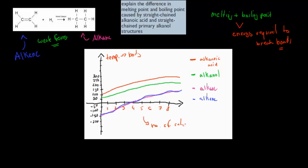There is a difference when it comes to the other two. Alkanols have a higher boiling point, and alkenoic acids have an even higher boiling point. Alkenes and alkanes will often be gaseous because they only have these weak dispersion forces holding them together, whereas the other ones have something else happening too.